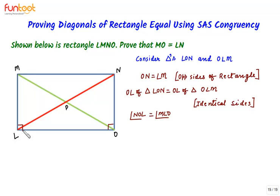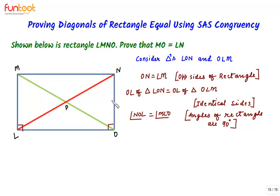Angle NOL is equal to angle MLO, as the angles of a rectangle are 90 degrees. So in the two triangles, ON is equal to LM, side OL is common to both triangles, and angle NOL is equal to angle MLO.